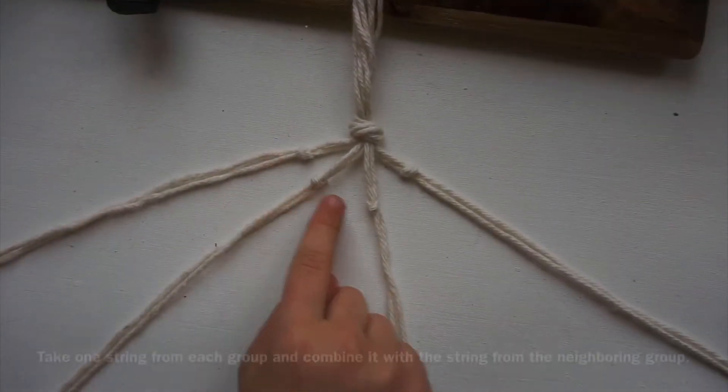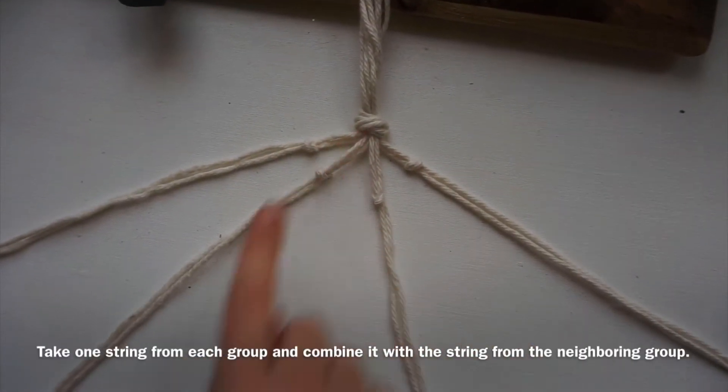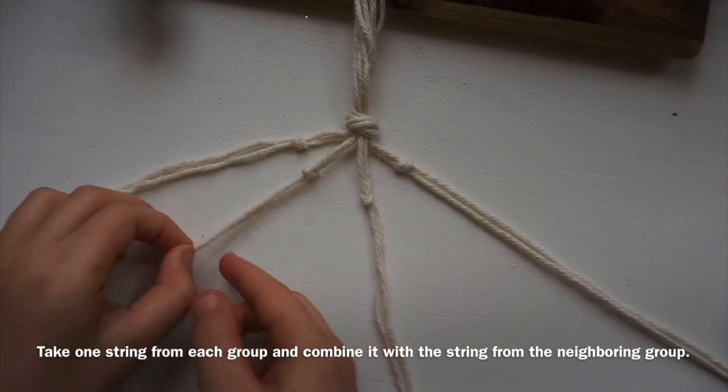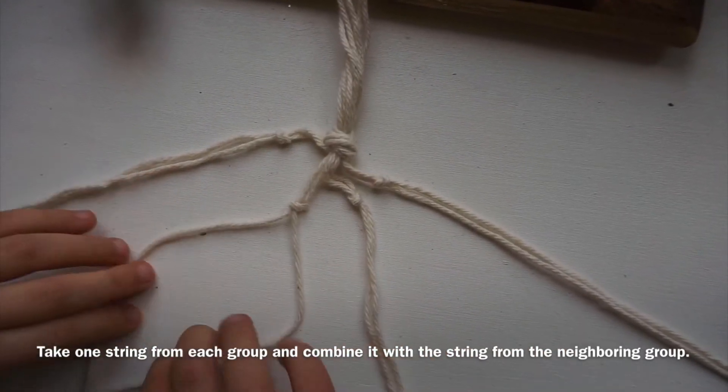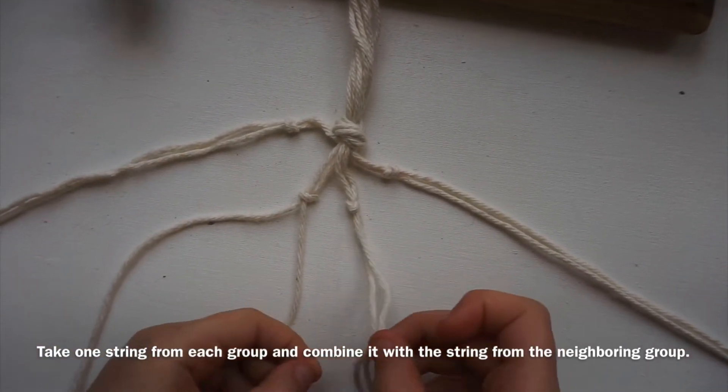With your four knots tied away from the main knot, you're going to start by combining the groups. So one from each string will go to the partner one next to it.